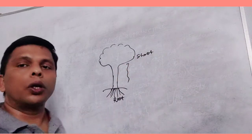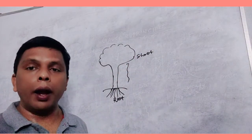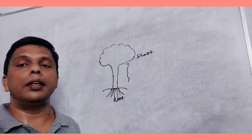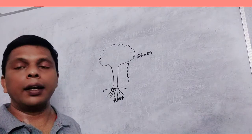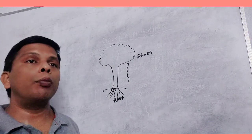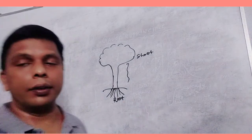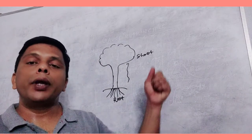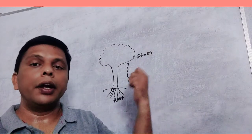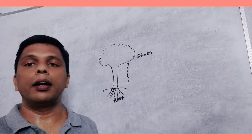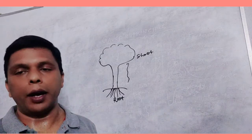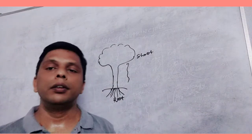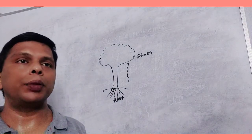The shoot consists of stem, branches, leaf and flower. The root has primary root, secondary root, adventitious root, so many divisions are there. The roots help in anchorage of plant and also help in absorbing mineral water for the plant body. The root and shoot have specific functions.